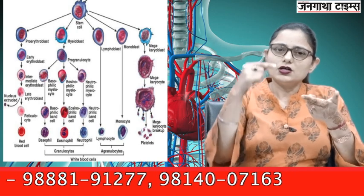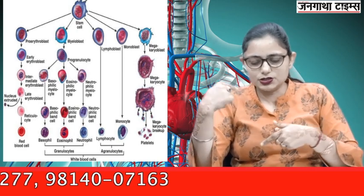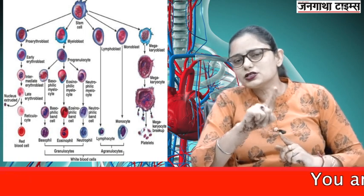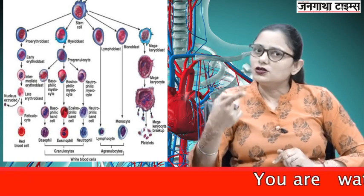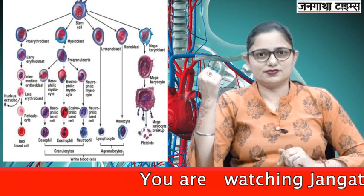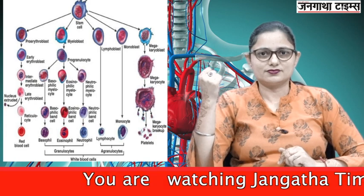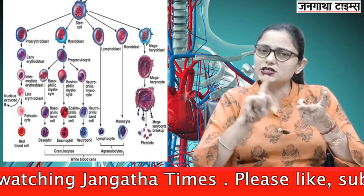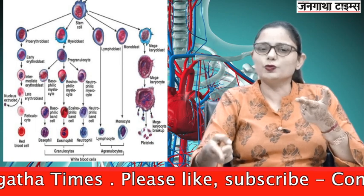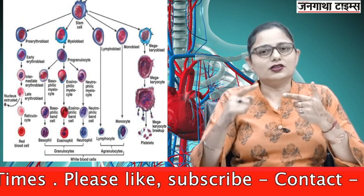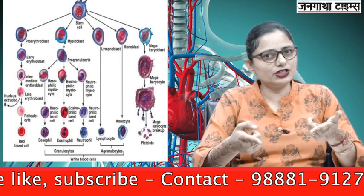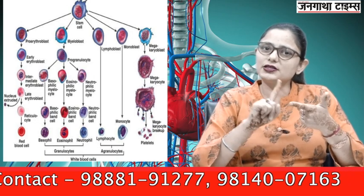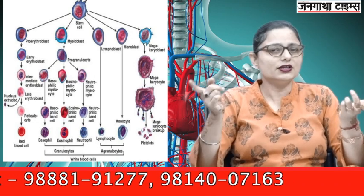The stem cell also gets converted into lymphoblast, which forms the lymphocyte. The same hemocytoblast differentiates into monoblast, which forms the monocyte. Lymphocytes and monocytes are the agranulocytes.